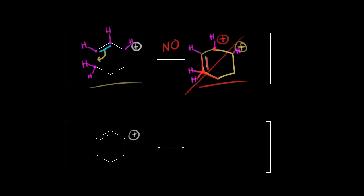So what is the proper resonance structure to draw? You take your electrons and move them in the direction of the positive charge — the plus one formal charge. So the electrons in blue move over to here, and that moves the positive formal charge over to this carbon.